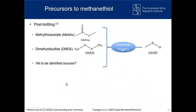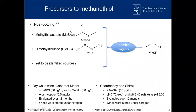Moving on to methanethiol — the formation during fermentation is well known, with the main precursor being methionine. Post-bottling, methylthioacetate and dimethyl disulfide have been suggested as the main sources of methanethiol, but these precursors had never been evaluated in real wines, only in model systems and water. So we designed two experiments. In the first, we added dimethyl disulfide and methylthioacetate to wines at 50 micrograms per liter, with copper as a variable. Wines were prepared and stored under nitrogen and evaluated over 12 months.